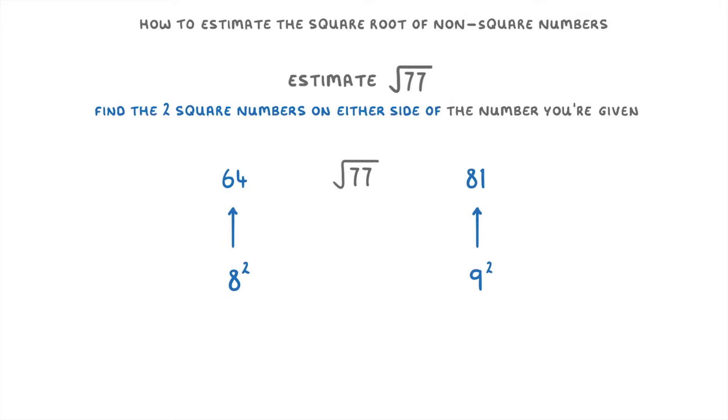This tells us that the square root of 77 must be a number in between 8 and 9, so perhaps something like 8.5.